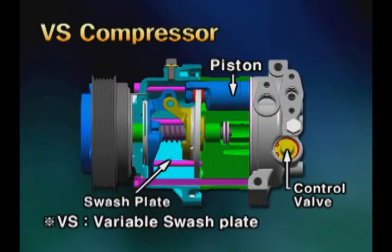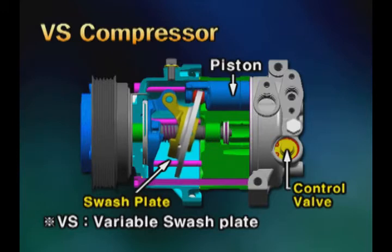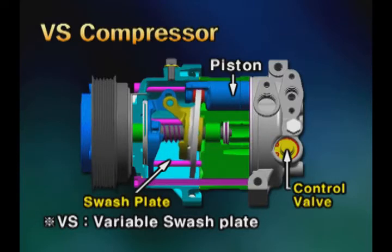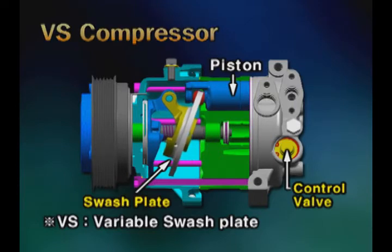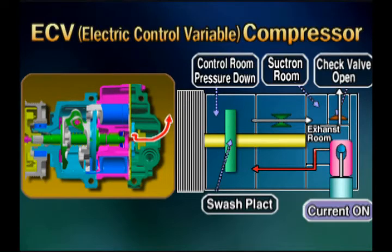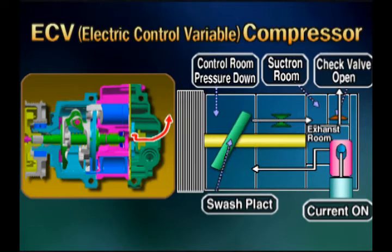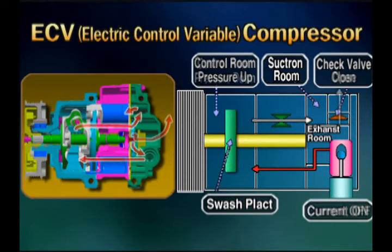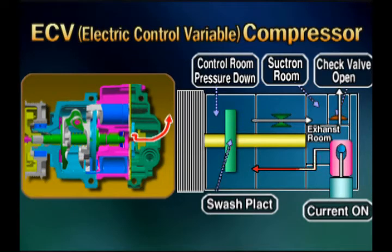For the conventional variable swashplate compressor, VS type, the oblique angle control of the swashplate is mechanically performed according to the intake pressure variation of the compressor applied to the control valve. Contrarily, for the electric control variable swashplate compressor applied to the Genesis, VS type, an electric solenoid valve — ECV, electric control valve — is applied for the variable control valve. Therefore, the oblique angle of the compressor internal swashplate is controlled by the electric signal of the DATC module.